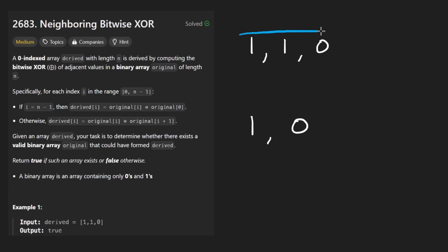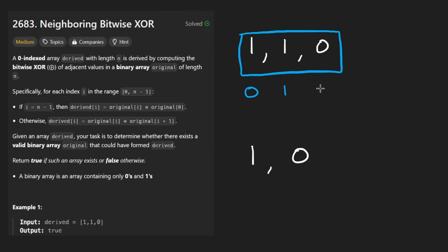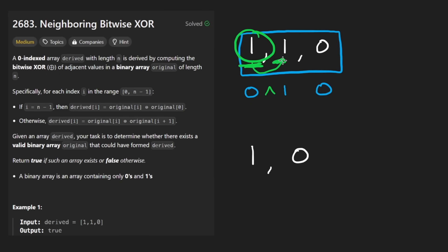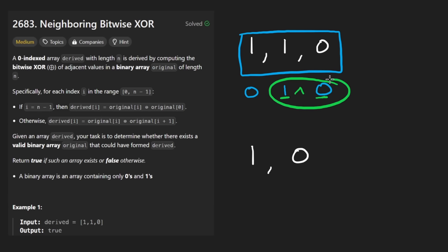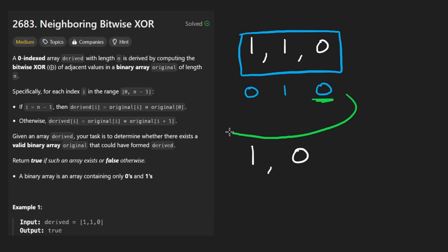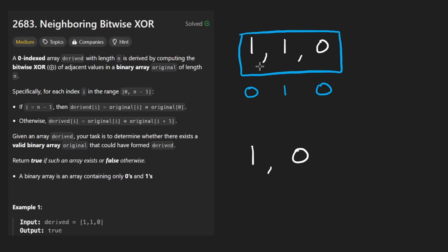But the array itself was actually made from another binary array. For example, this one could have been formed with zero, one, zero. Each of these values represents the XOR of two elements — this element and the element exactly to the right of it. So zero XOR one is one, and one XOR zero is also one. For the last element, we loop back around assuming it's a circular array. Since they're the same number, the XOR is zero, and that's what we get in the derived array.